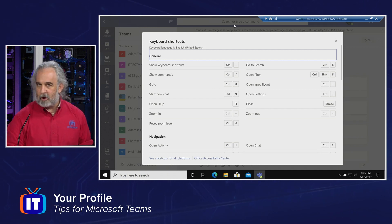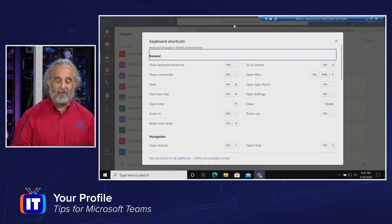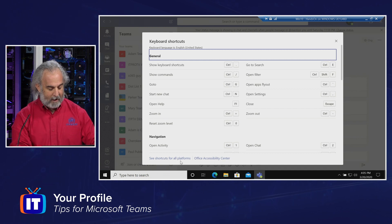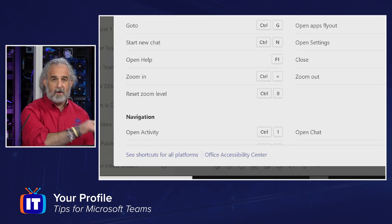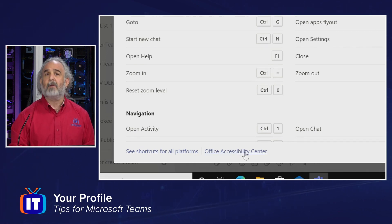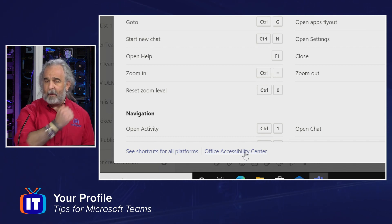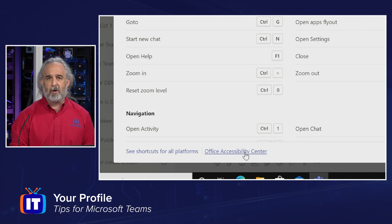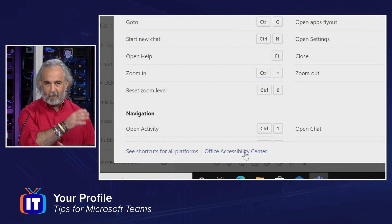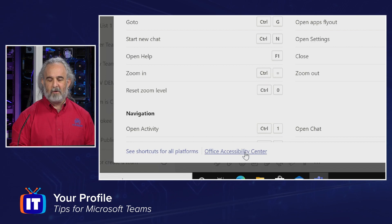Definitely check out the keyboard shortcuts page — it's going to give you a lot of capabilities. At the bottom, you can see shortcuts not just for Teams, but a link to shortcuts for all platforms, as well as the accessibility center. If you have some sort of accessibility requirement, definitely take advantage of this and make sure you understand how to set Teams up so that you can be maximally effective and work comfortably. There are links that allow you to do that here with no trouble at all.